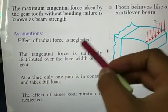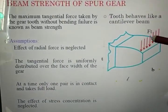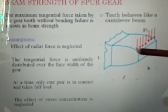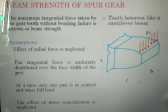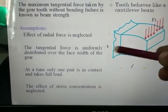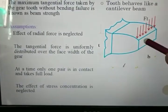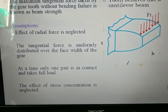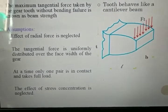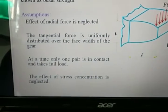Firstly, effect of radial force is neglected. So we know that there is a radial force on the gear and that is neglected while designing of beam strength equation. Secondly, Lewis is considering that tangential force is uniformly distributed over the face width of the gear. And that is possible when the gear is rigid and accurately machined.